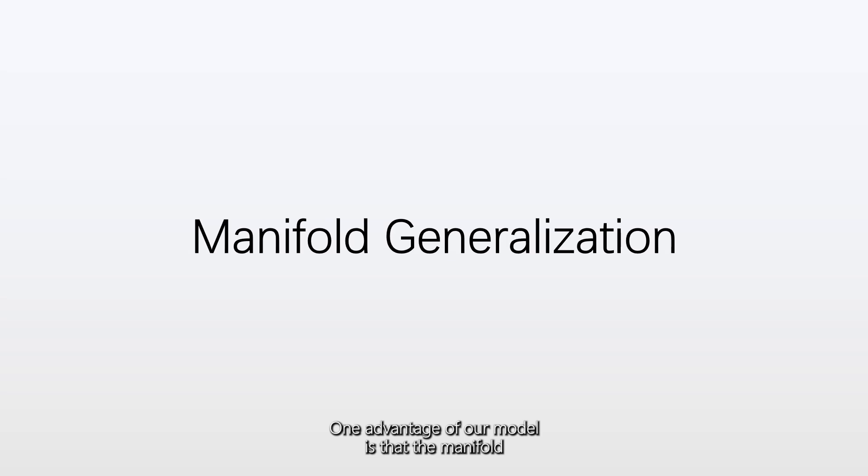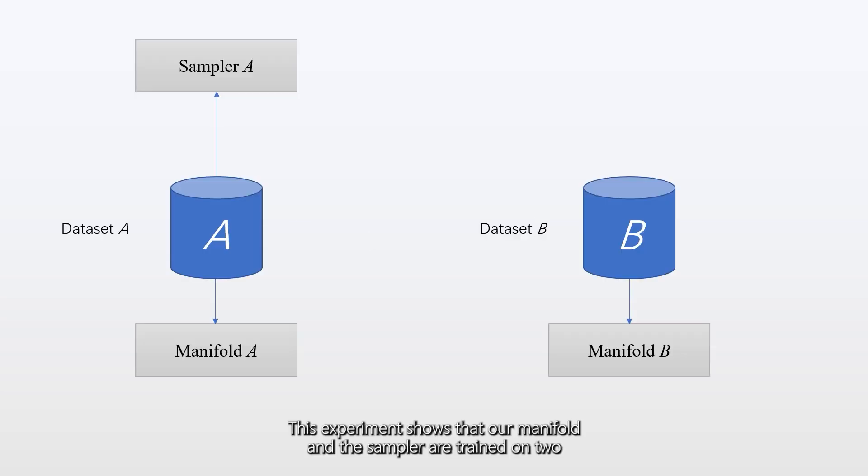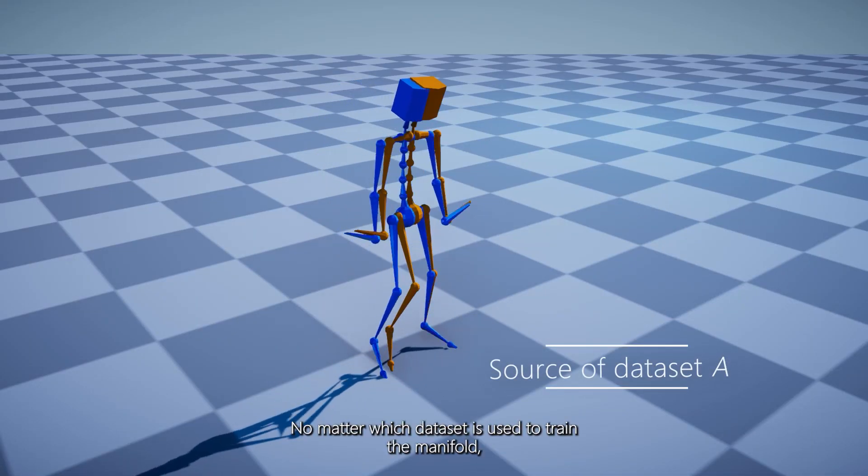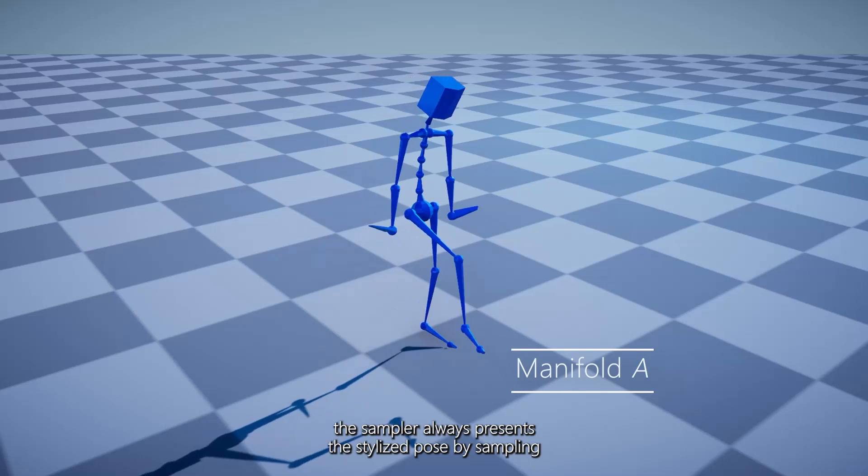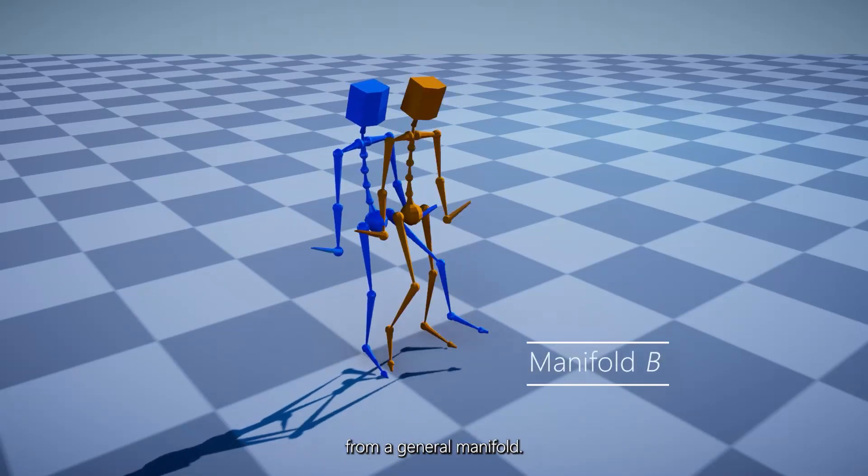One advantage of our model is that the manifold and sampler do not have to be trained on the same dataset. This experiment shows our manifold and the sampler trained on two non-overlapping datasets. No matter which dataset is used to train the manifold, the sampler always presents the stylized pose by sampling from a general manifold.